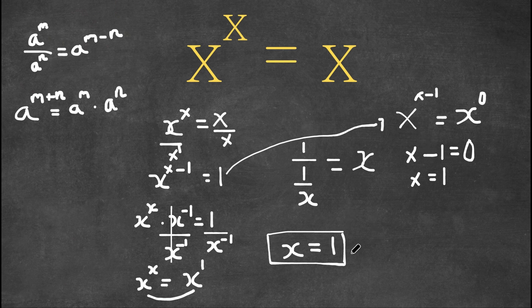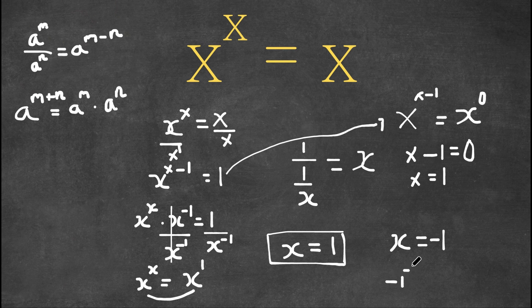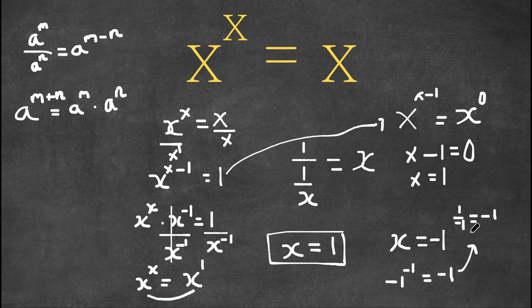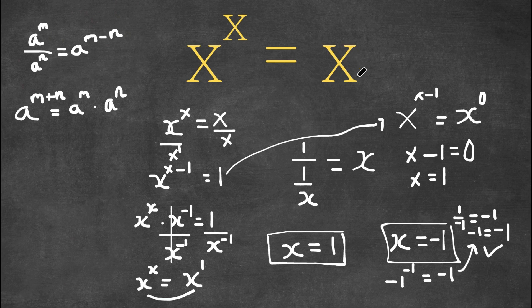We have our solution x equals 1. However, there is actually another solution: x equals negative 1. This would also work. If we plug it in, negative 1 to the power of negative 1 equals negative 1. Negative 1 to the power of negative 1 is simply 1 over negative 1, which equals negative 1. So negative 1 equals negative 1 — this checks out. Therefore, x equals negative 1 is also a solution.